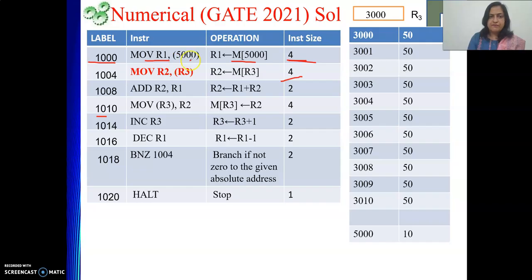Move R1, bracket 5000. So R1 is holding the content of memory location 5000. That is given as 10. So value of R1 will be 10.